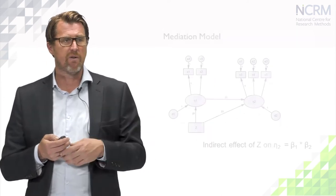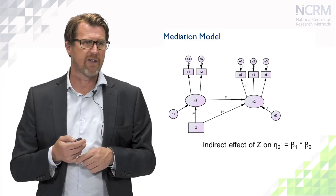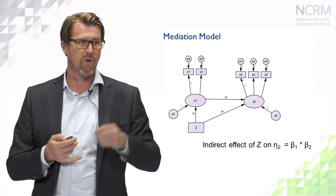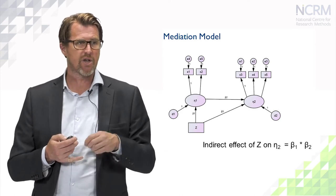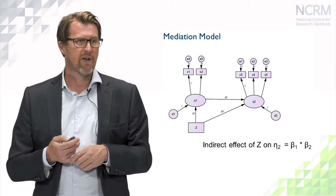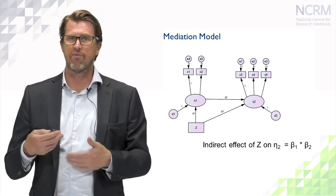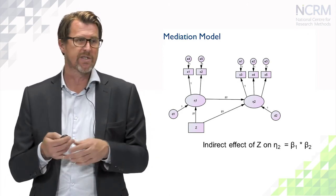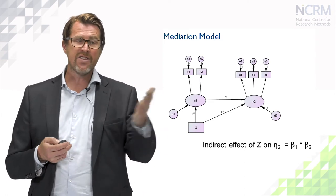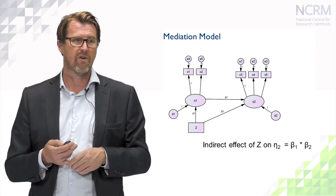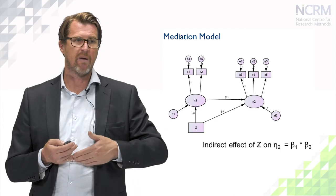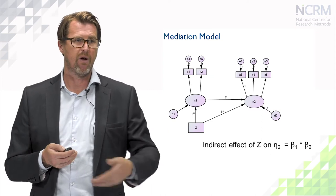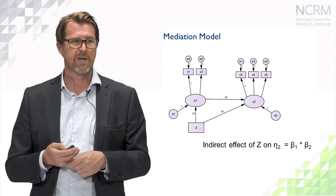But we can also estimate the indirect effect here, because we've got the beta1 coefficient of eta1 on z, and the beta2 coefficient of eta2 on eta1. Now if we take the product of those two parameters, then that will give us the indirect effect of z on eta2. So that's how we can algebraically recover the indirect effect of one variable on the other, is taking the product of the two beta weights.